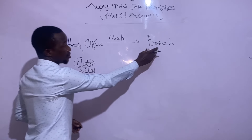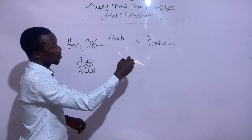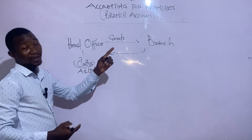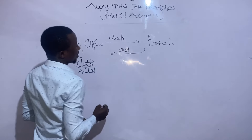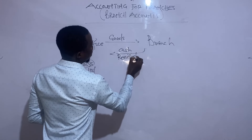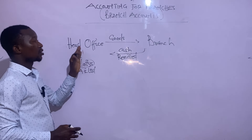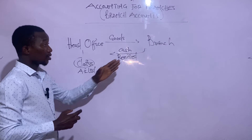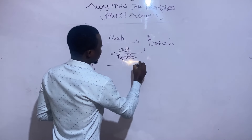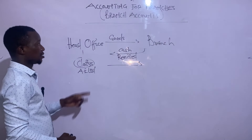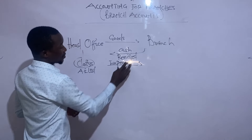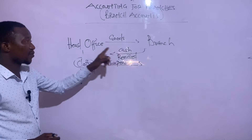After the branch makes sales of goods, the cash received is remitted to the head office. The head office is allowed to open a local bank account at the branch, into which every sale will be deposited. All expenses incurred by the branch are also paid by the head office.